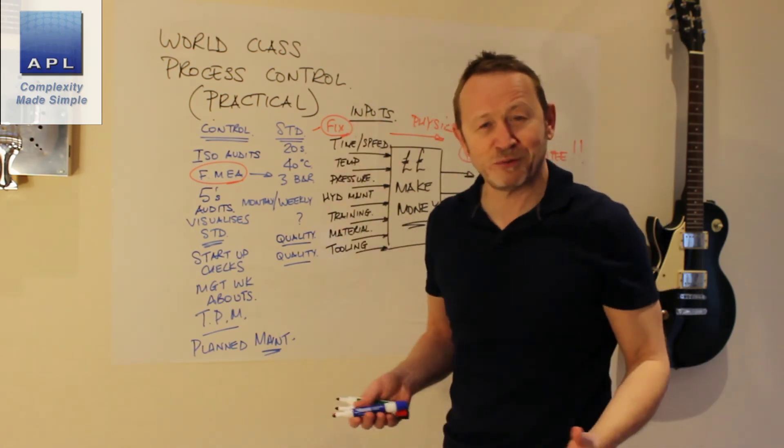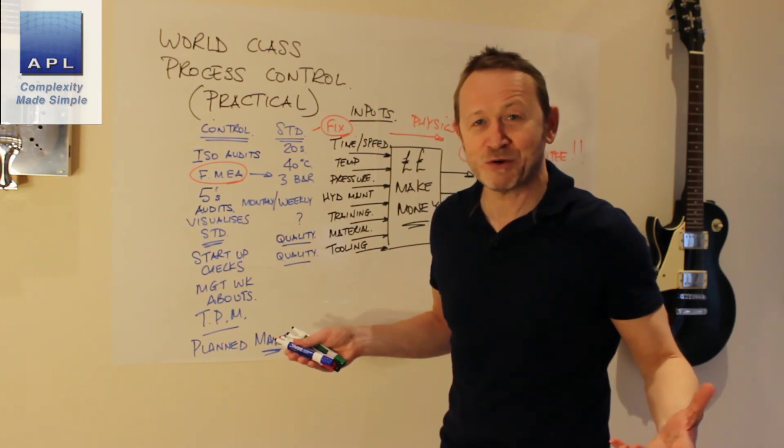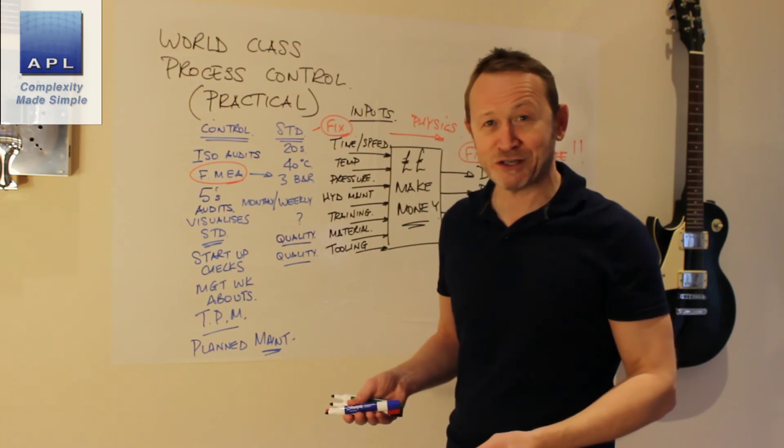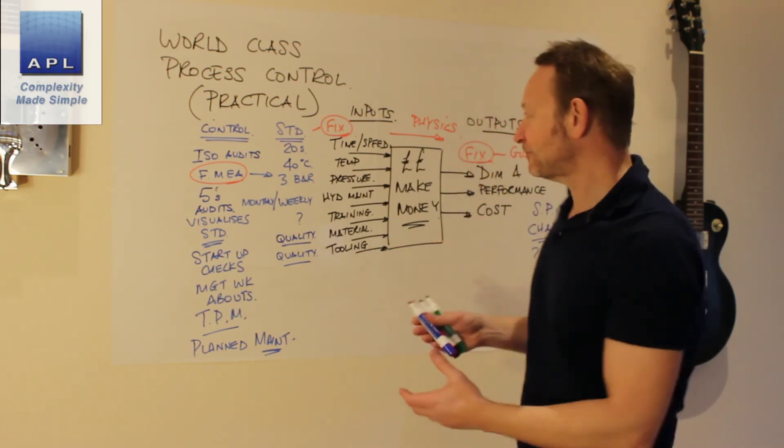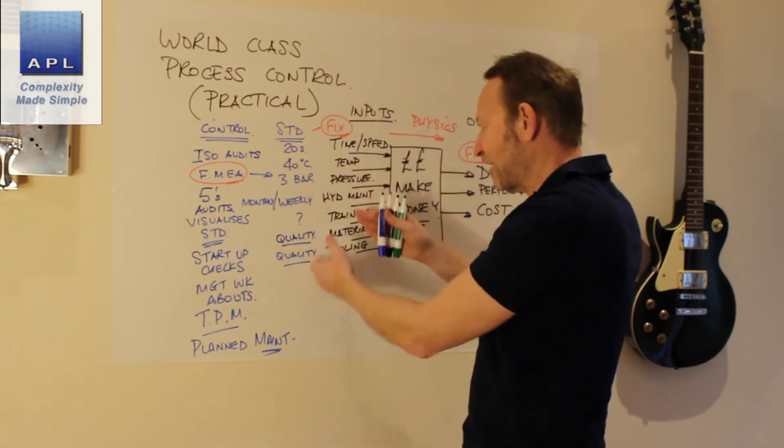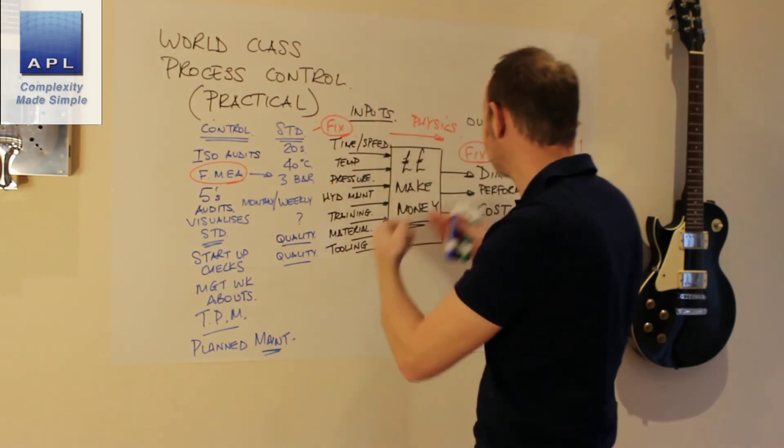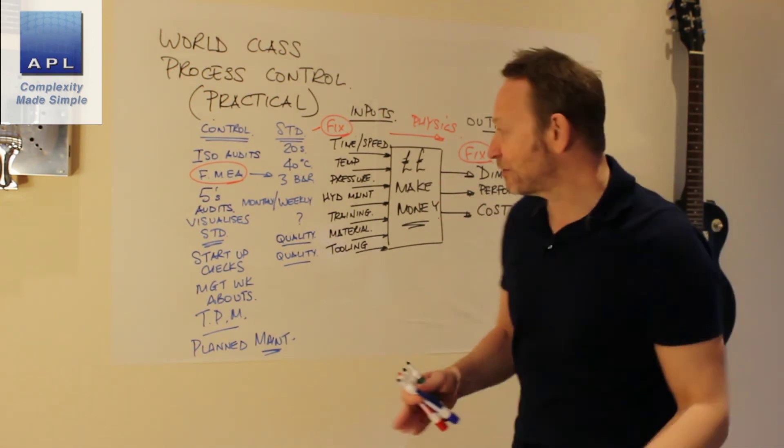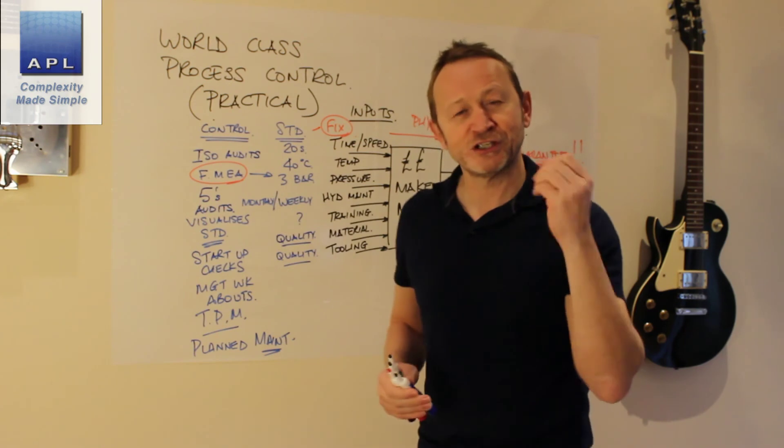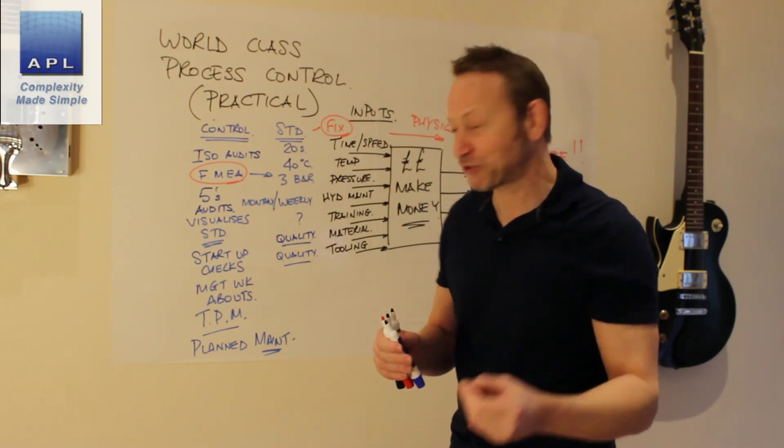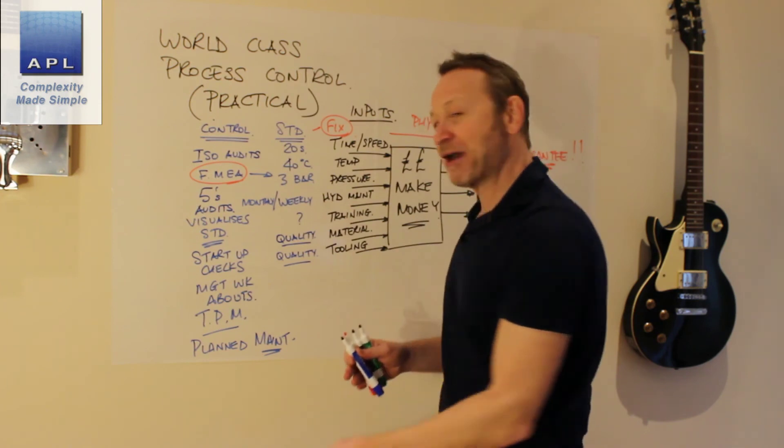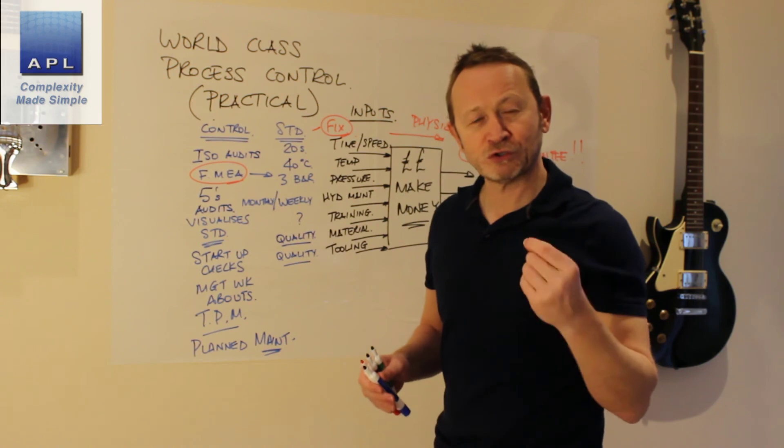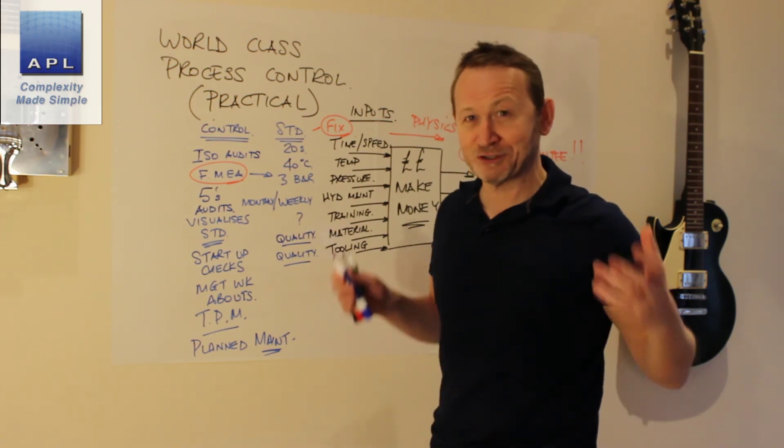Now, we have standards. We fix them. We adhere to the standards and the process works. We have an SPC chart that spots any abnormality. We use 5S to visualize abnormalities to get control of the process. If we see an abnormality, we put it right and the process goes back in control. World-class practical process control.